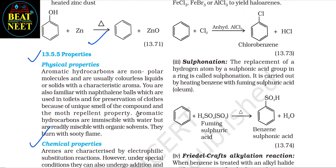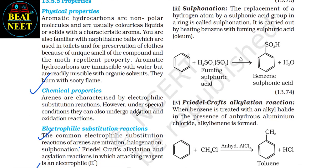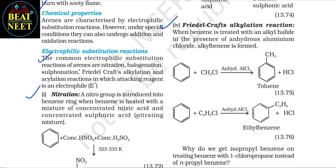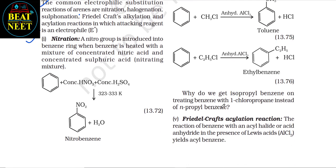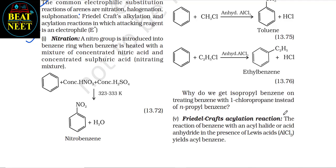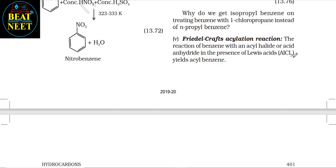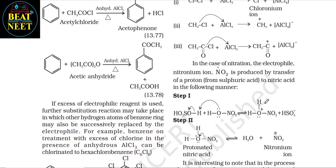(3) Sulfonation: the replacement of a hydrogen atom by a sulfonic acid group in the ring is called sulfonation; it is carried out by heating benzene with fuming sulfuric acid (oleum) to form benzene sulfonic acid. (4) Friedel-Crafts alkylation: when benzene is treated with an alkyl halide in the presence of anhydrous aluminium chloride, alkylbenzene is formed; toluene and ethylbenzene are examples. Note that isopropylbenzene is obtained on treating benzene with 1-chloropropane instead of n-propylbenzene. (5) Friedel-Crafts acylation: reaction of benzene with an acyl halide or acid anhydride in the presence of AlCl₃ yields acylbenzene.